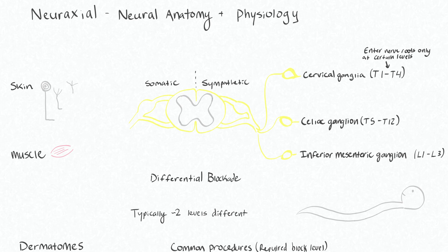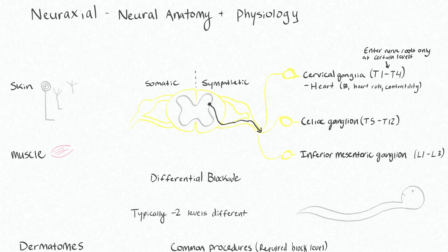Importantly, the cervical ganglia carry sympathetic information to and from your heart. This is crucial for the beta adrenergic tone to maintain elevated heart rate and contractility. By having a sympathetic neuraxial block at T1 to T4, you are blocking these efferents that control sympathetic tone at your cervical ganglia, and you're also blocking all of the sympathetic afferents at the same time.